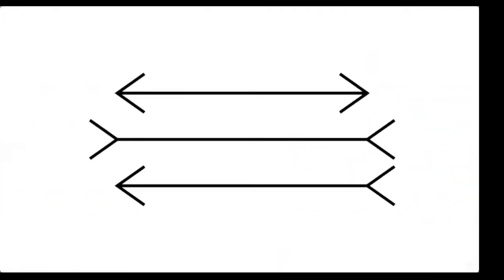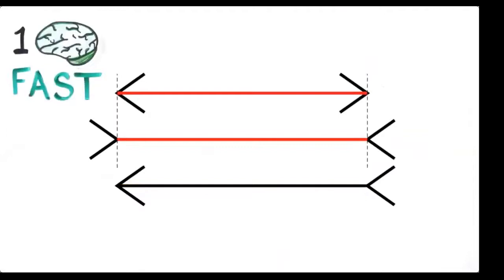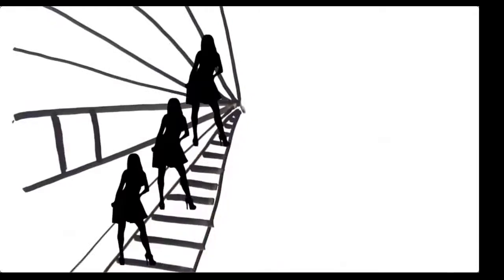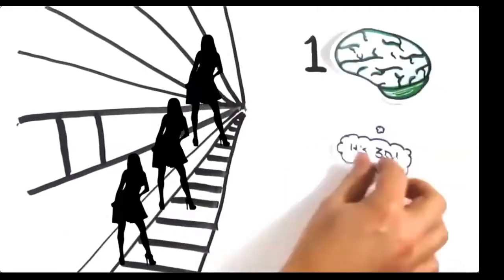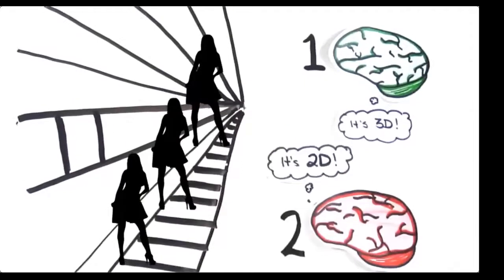Take these lines, for example — it's clear they're different lengths, but if you measure them, they're actually the exact same length. Even now that you know, system one, or your fast thinking, can't stop seeing the illusion because it acts automatically. A similar effect is seen here: which figure is the largest? Again, they're all the same size, but the suggestion of perspective and depth causes your system one to interpret the picture as three-dimensional, even though it's on a flat two-dimensional surface. It's making quick work of available information, and so your conscious system two, or slow thinking, must compensate after the fact and choose not to believe your intuition.